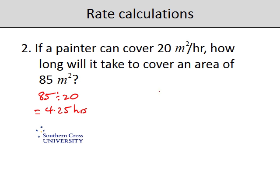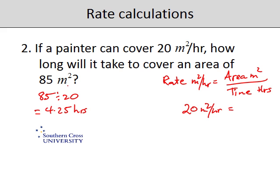Now the other way of doing that, if that's not intuitive, is to say that the rate in square metres per hour is equal to an area in square metres over the time in hours. Now, what we've been given in this question is, we know that the rate is 20. We know that the area we want to cover is 85 square metres, so we need to find the time that goes with that.